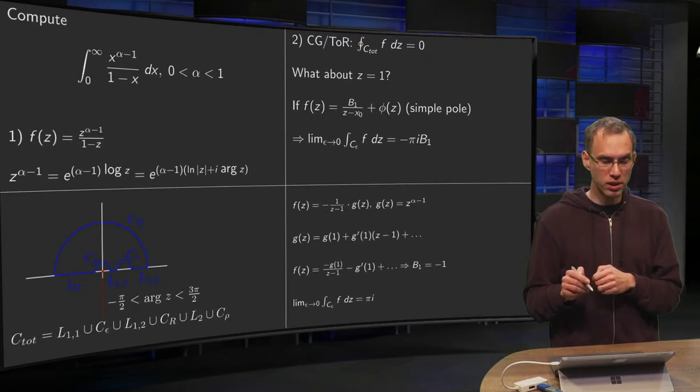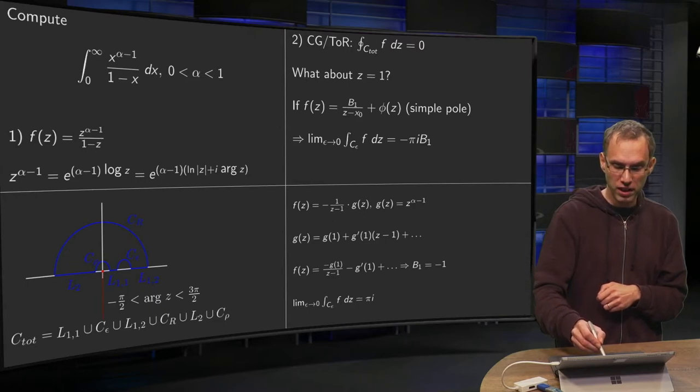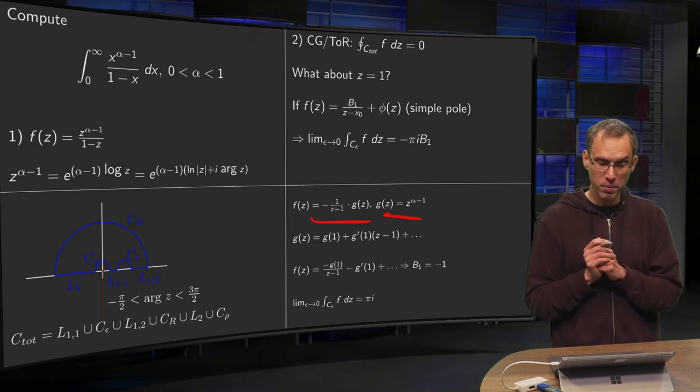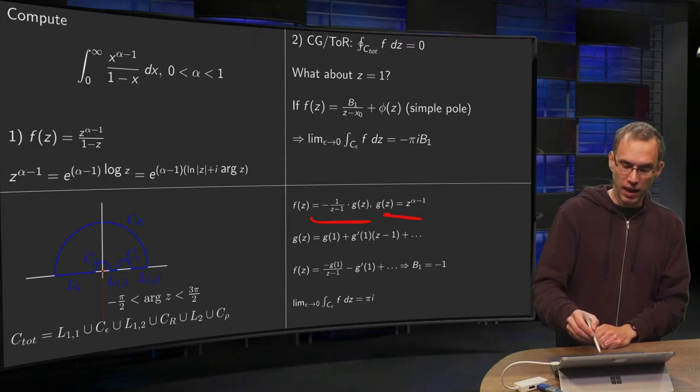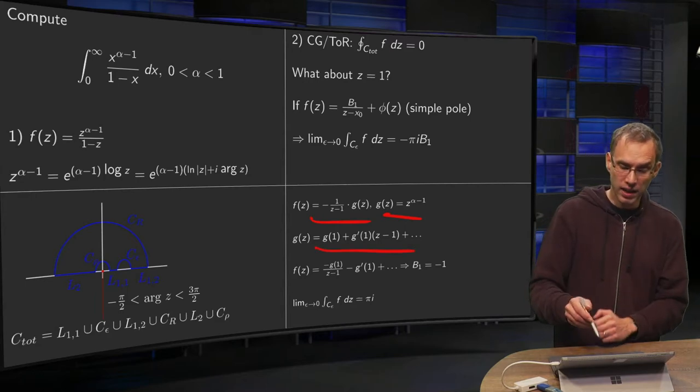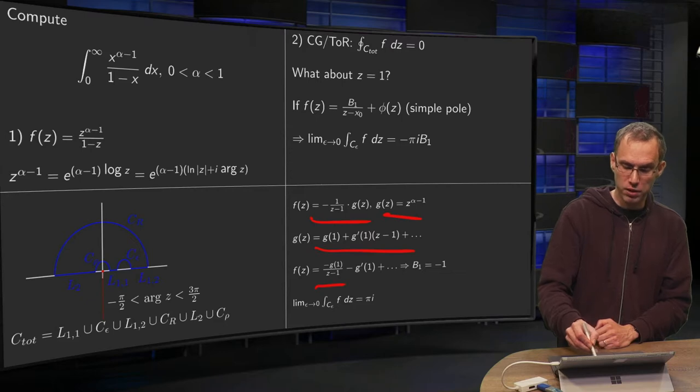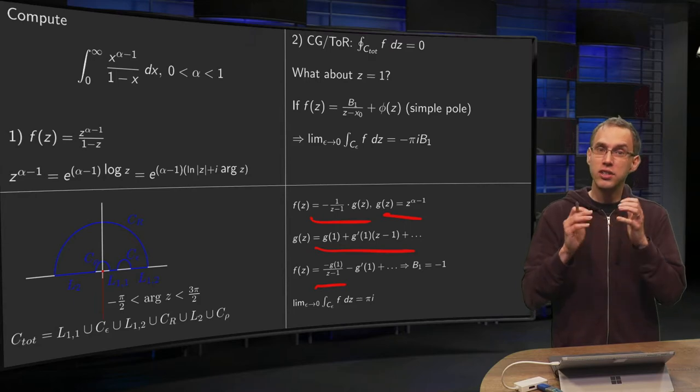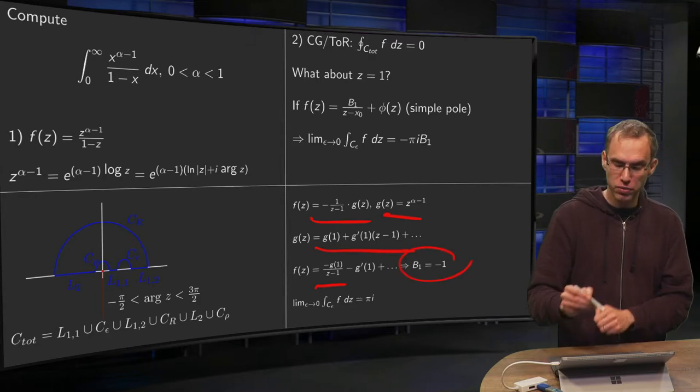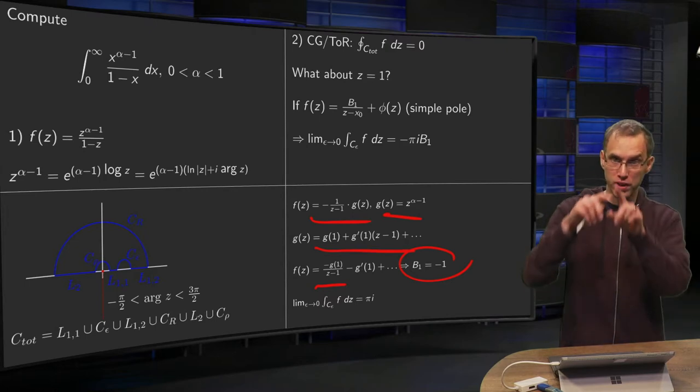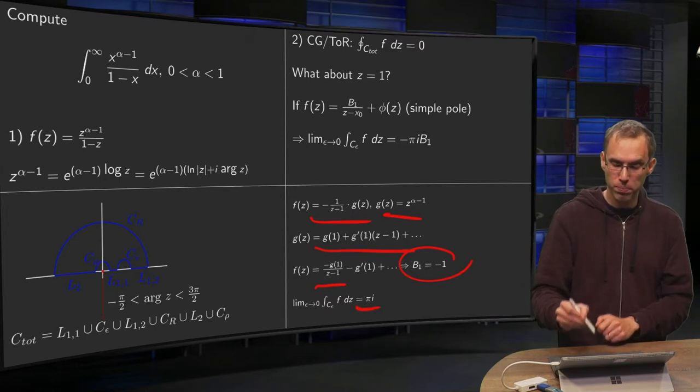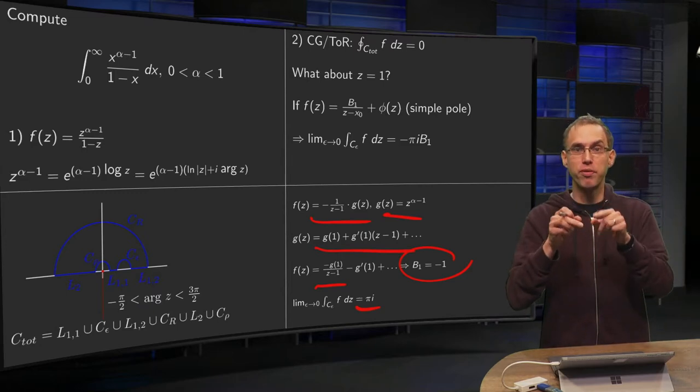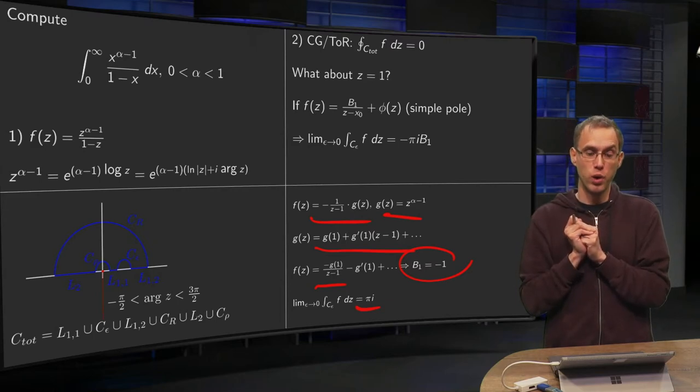So let's compute this contribution. You can write your f of z as minus 1 over z minus 1 times g of z, z to the power alpha minus 1. Now your g can be expanded like this. And then you'll see that you can write your f of z as minus g of 1 over z minus 1 plus something which is analytic. So then we are happy. We have our b1 equals minus 1 and we have our integral over the c epsilon. It's equal to pi i, namely minus pi i times minus 1 equals pi i. So that's the part of the theorem of residues and how we deal with our point x equals 1.